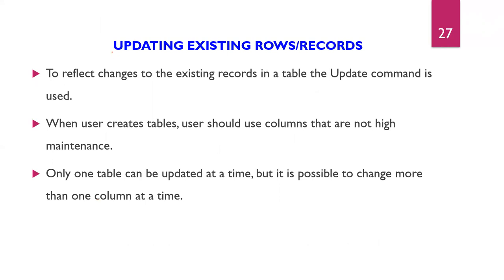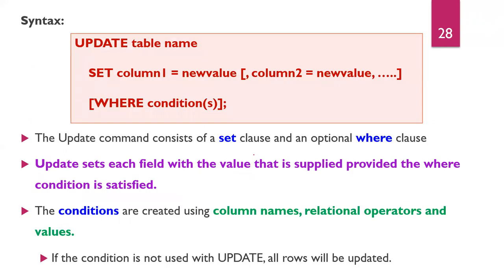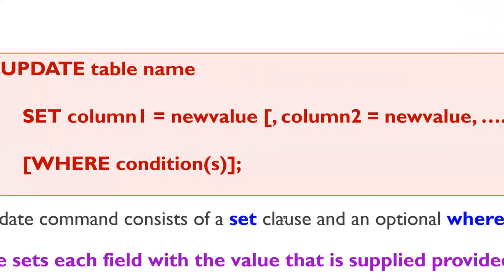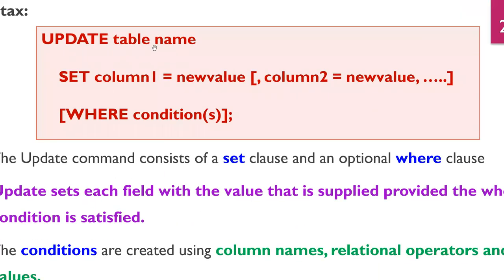Next we are going to see about updating existing rows or records. To reflect changes to existing records in a table, the UPDATE command is used. Only one table can be updated at a time, but it is possible to change more than one column at a time. The syntax is: UPDATE table_name SET column1 = new_value WHERE condition.